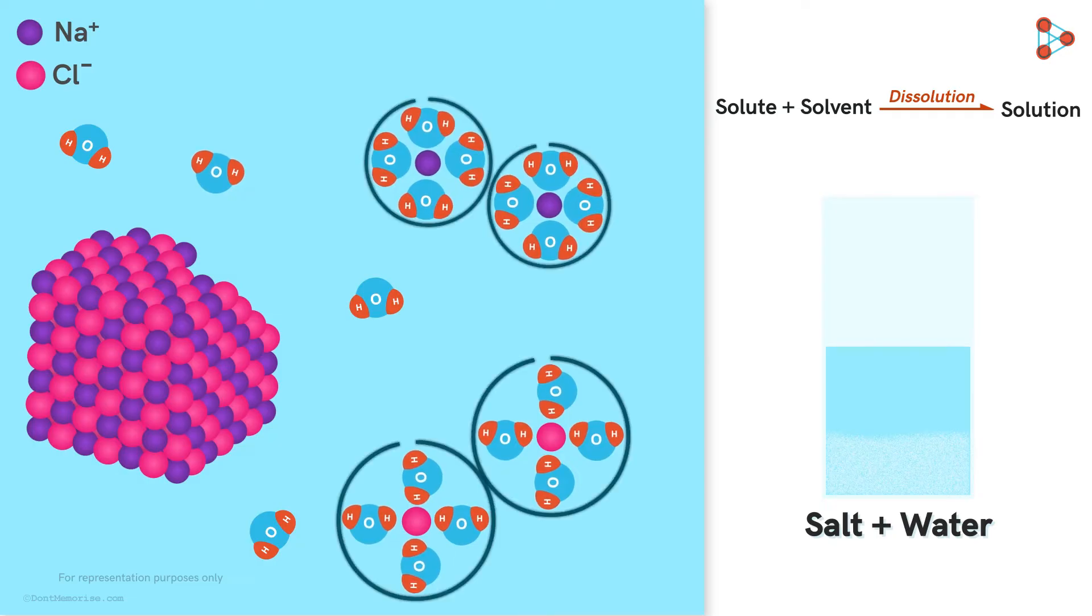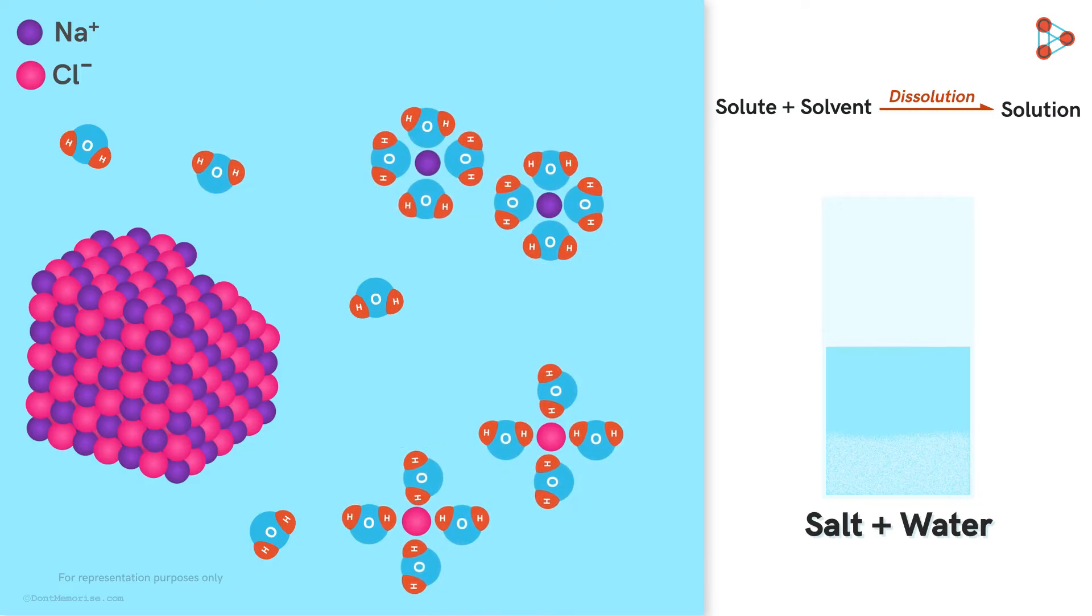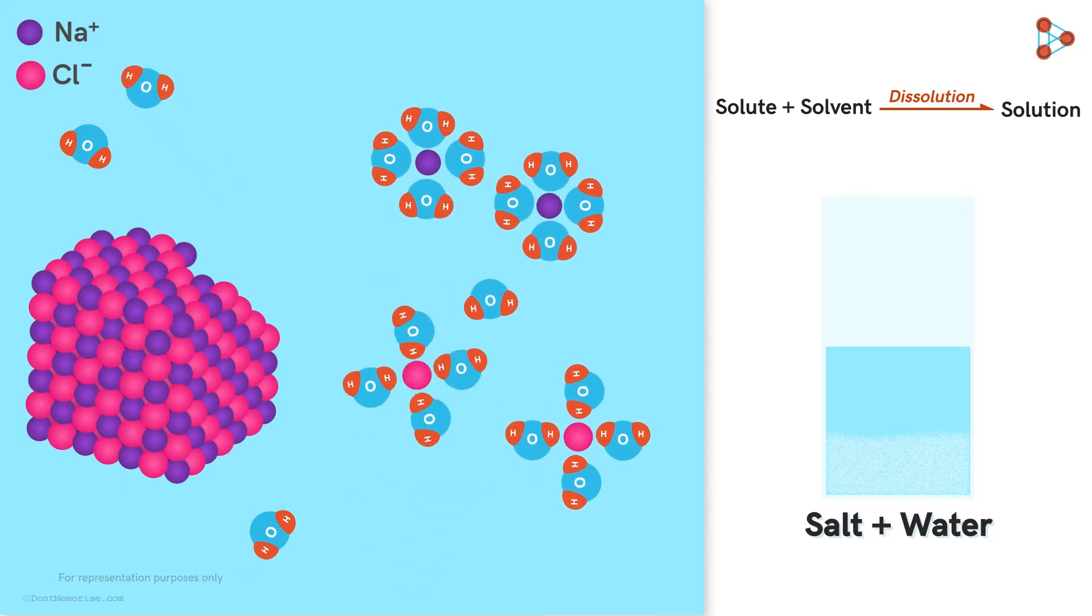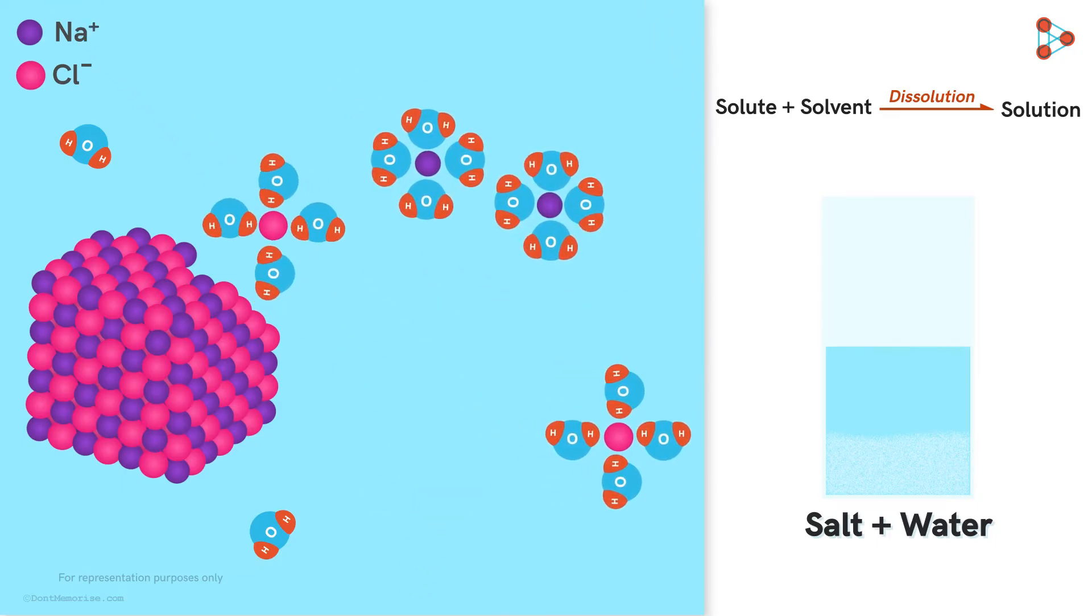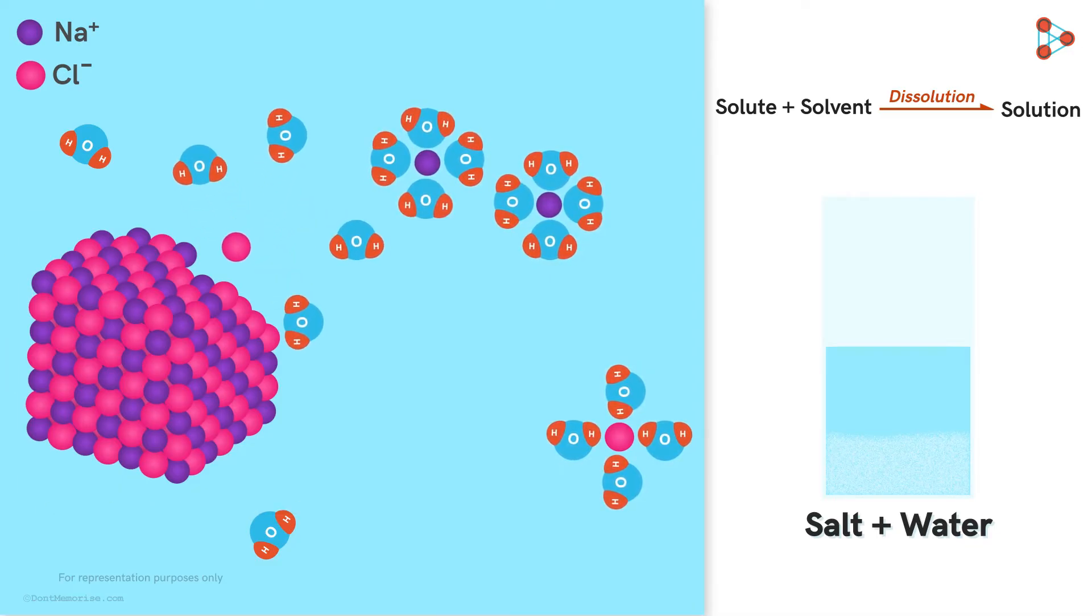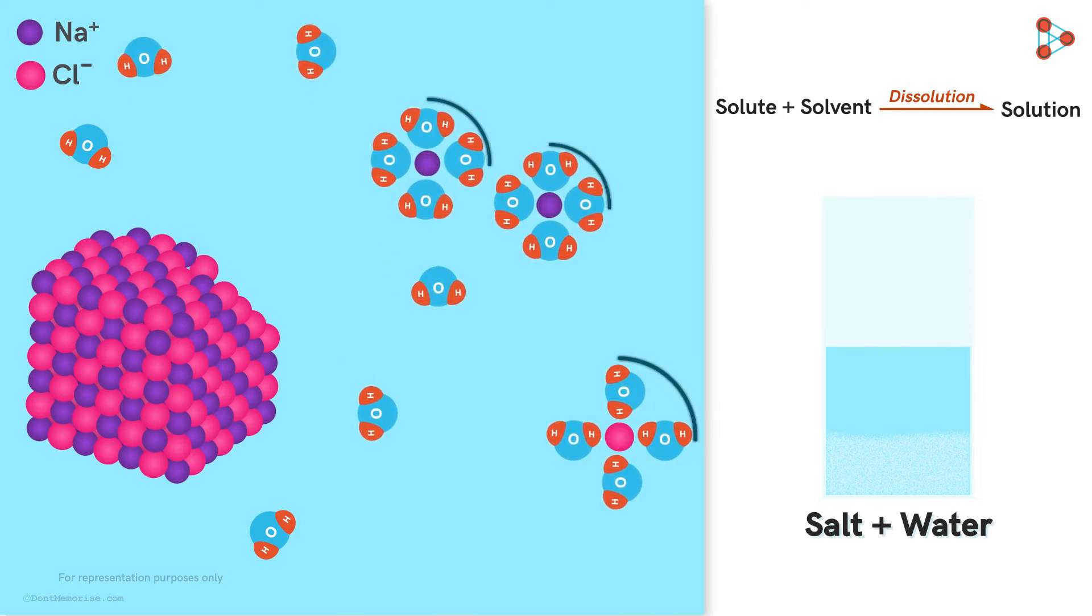We saw that ions separate from the crystal and are stabilized by water molecules. But sometimes the free sodium and chloride ions collide with the crystal. Due to the strong interaction between the ions and the crystal, these ions become a part of the crystal again and separate out from the solvent. So as some solute particles are dissolving into the solution, some dissolved solute particles are also separating from the solution. This process is called crystallization.